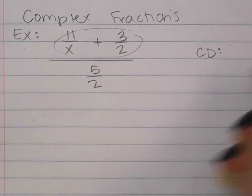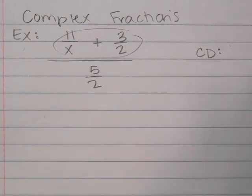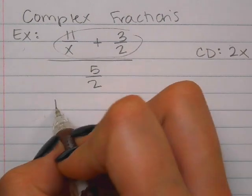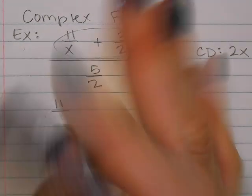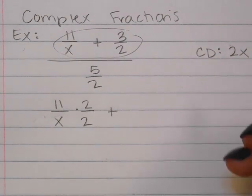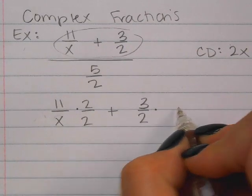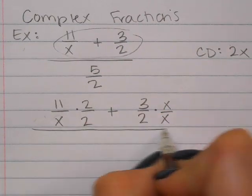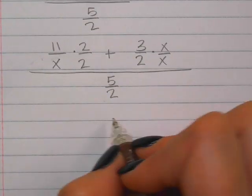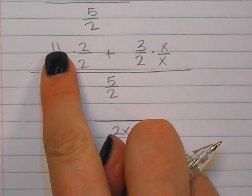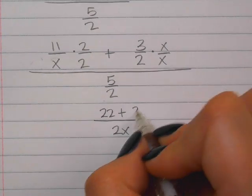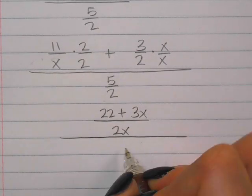The common denominator between these two fractions is 2 and x. So I'm going to fix each of them. 11 over x needs to multiply by 2 over 2 so that it can have that common denominator. 3 over 2 needs to multiply by x over x so it can have that common denominator. Now I can take the top and write it over 2x. I have 11 times 2 is 22 plus 3x, and that's divided by 5 over 2.